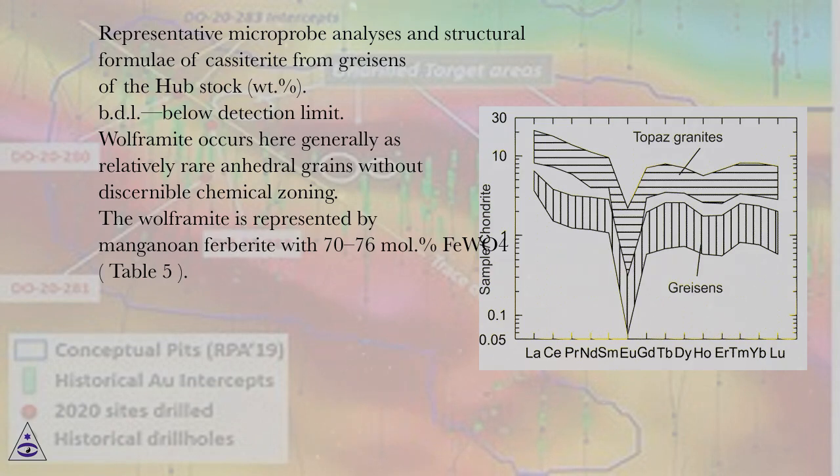Wolframite occurs here generally as relatively rare anhedral grains without discernible chemical zoning. The wolframite is represented by manganoan ferberite with 70 to 76 mol% FeWO4, Table 5.